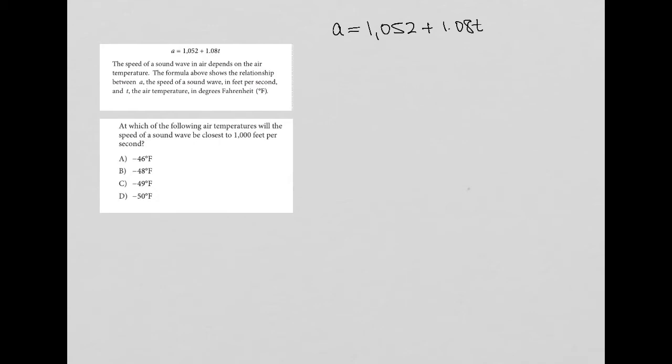It tells us that the speed of a sound wave in air depends on the air temperature. The formula shows a relationship between A, which is the speed of sound in feet per second, and T, the air temperature in degrees Fahrenheit.